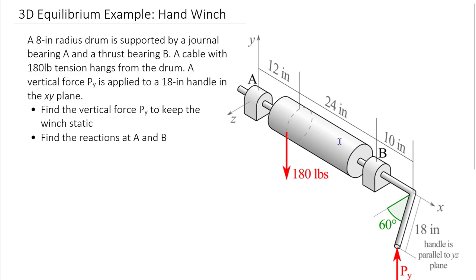Just to orient ourselves to the problem, we have a designated axis system — x lies along the full length of this winch. We have two different bearings supporting the rod coming through the middle and the drum. A is a journal bearing, which is a free axle bearing not providing any force support along the length of the axle. B is a thrust bearing, so it can have a force along x in addition to forces along the y and z axes. There's 180 pounds hanging vertically downward — negative y direction — off the edge of this 8-inch radius drum.